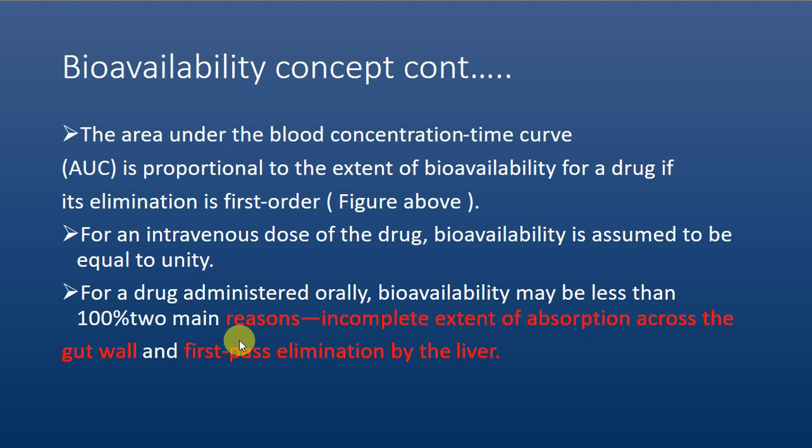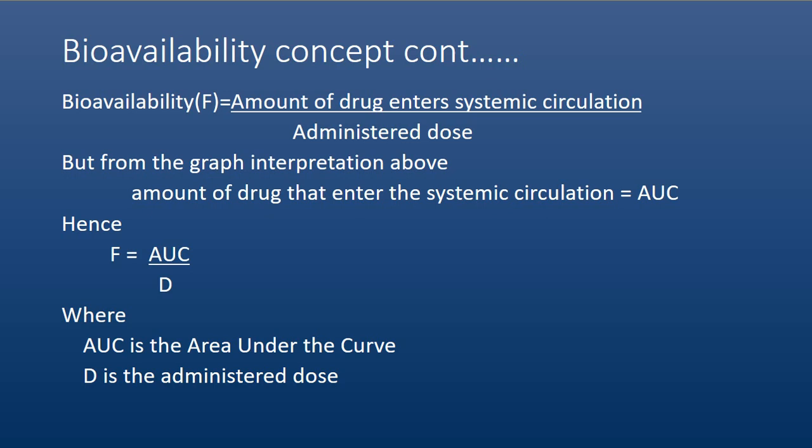First-pass elimination by the liver, or metabolism — this is the event that occurs when the drug first passes through the liver after it has been administered within the body. It passes first through the liver for other metabolic processes to take place, such as oxidation and other reactions, so it becomes very difficult for the drug to be distributed to other sites of the body.